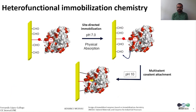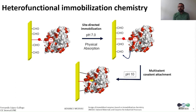All these immobilization chemistries can be combined in what we call heterofunctional carriers, where the enzyme's immobilization takes place through a sequential mechanism. The carrier is functionalized with two or more groups that allow both reversible and irreversible interaction between the enzyme and the carrier. First, the enzyme is rapidly immobilized on the carrier under mild conditions through reversible interactions like ionic bridges, or through selective interaction based on affinity — for example, His-tag and metal chelates.